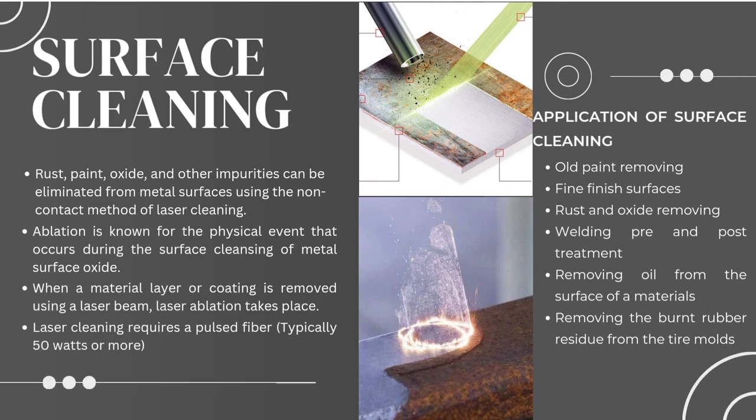Surface cleaning. Rust, paint, oxides, and other impurities can be eliminated from metal surfaces using the non-contact method of laser cleaning. Ablation is the physical event that occurs during surface cleansing of metal surface oxides. When a material layer or coating is removed using a laser beam, laser ablation takes place. Laser cleaning requires a pulsed fiber laser, typically 50 watts or more. Applications include old paint removing, fine-finished surfaces, rust and oxide removing, welding pre- and post-treatment, removing oil from material surfaces, and removing burnt rubber residue from tire molds.